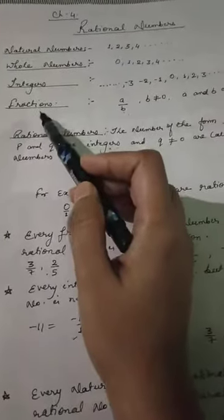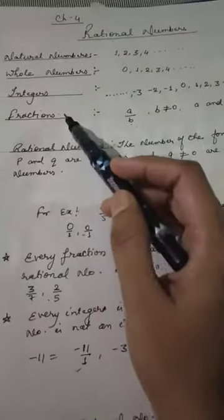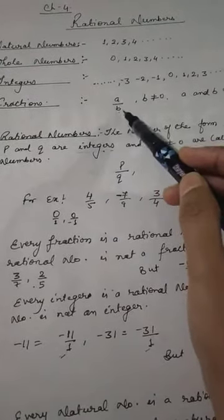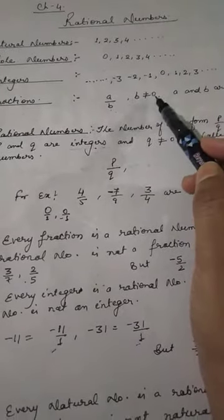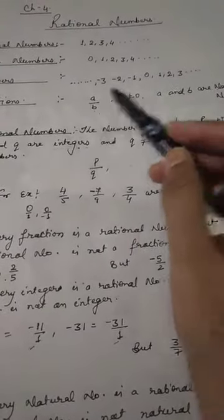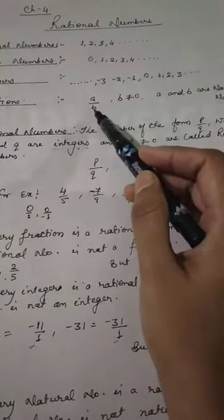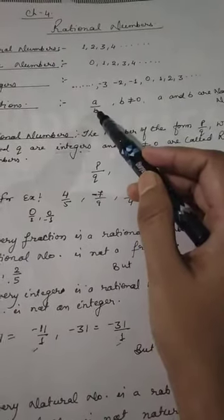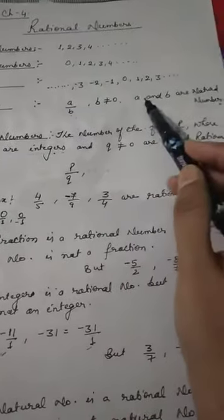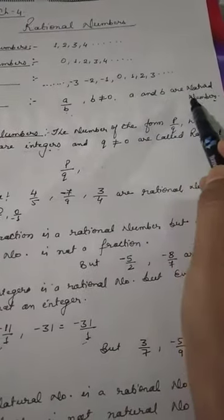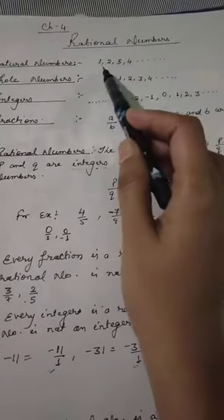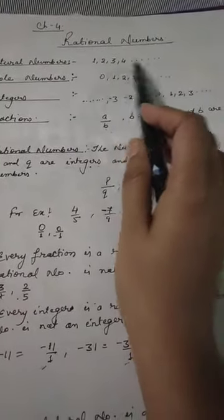Now fractions — fractions are numbers expressed in the form a/b, where b is not equal to 0. The denominator cannot be 0 because 0 cannot divide any number. Here, a and b are natural numbers, meaning all counting positive numbers.